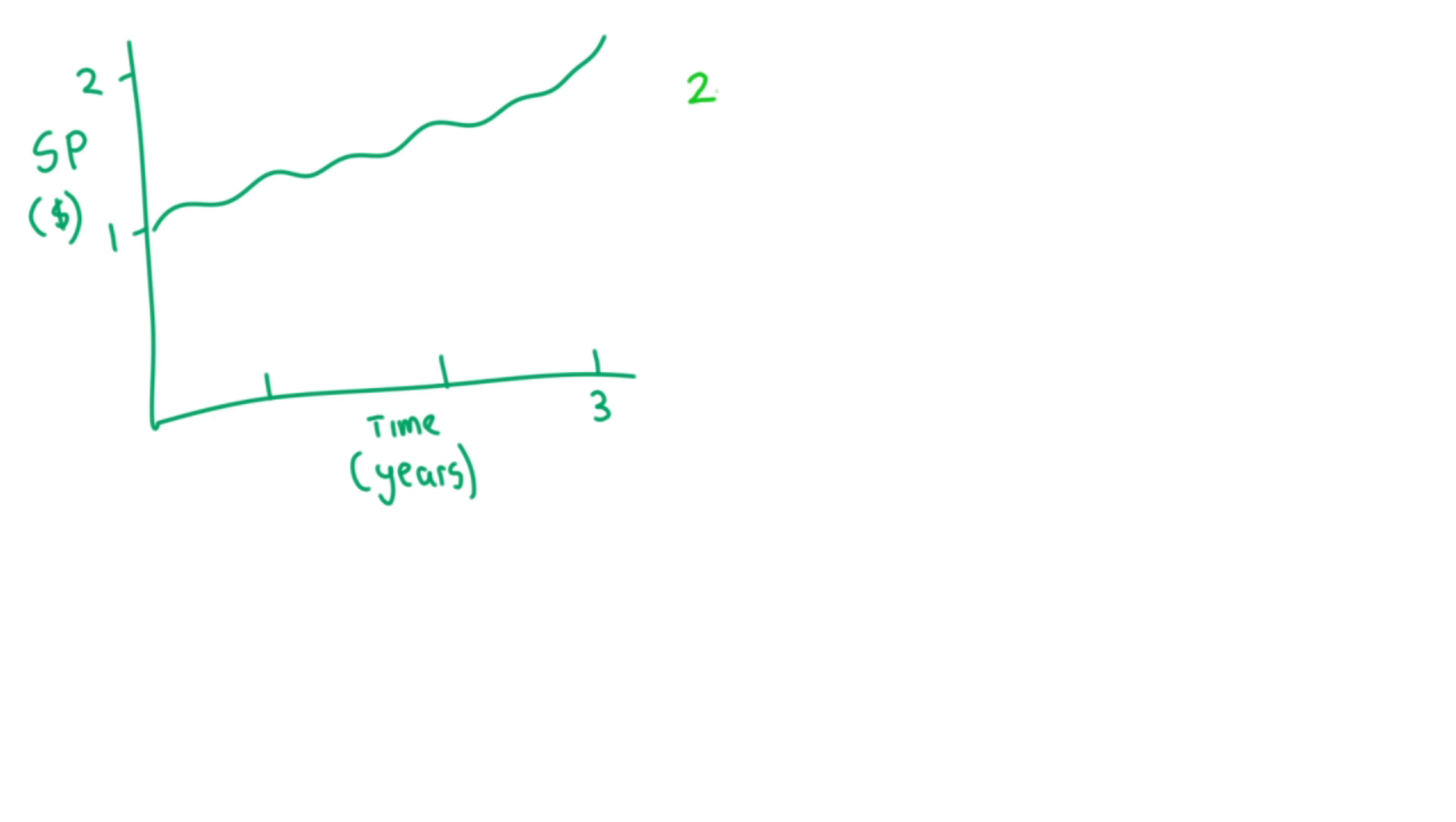The CAGR for this would have been the ending value of $2 divided by the starting value of $1 to the power of 1 divided by 3 years, minus 1 times 100 is 25.99%.